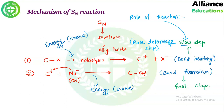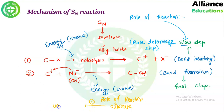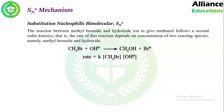If the rate of reaction depends on only one substrate, it is called a unimolecular nucleophilic substitution reaction (SN1). If two substrates are present, it is called bimolecular (SN2). Based on this knowledge, let us first study the SN2 mechanism. SN2 stands for Substitution Nucleophilic Bimolecular.